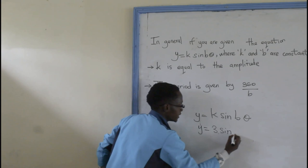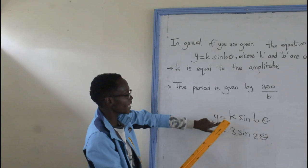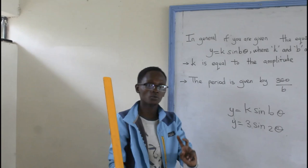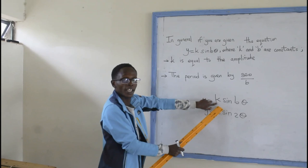For example, these are the constants. The value of K represents the amplitude of the wave without having to draw the wave on a graph paper. You can just find it by just looking at the value of K, which is the coefficient to the left of the sine.